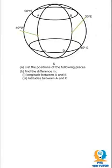Hello guys, today I just have a simple earth geometry question. This is PVS the tutor. So we've got the earth surface there showing four places: A, B, C, and D.